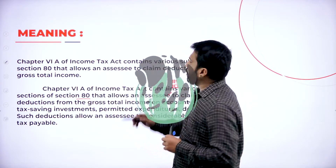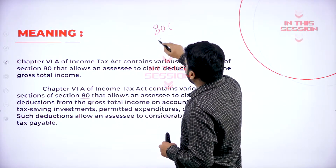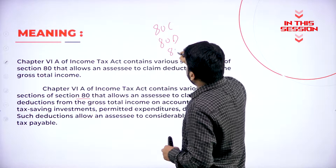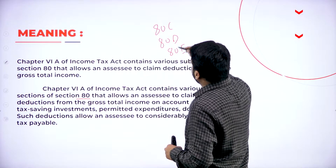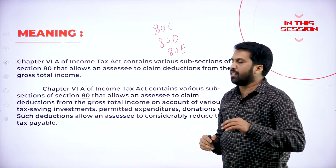Under Section 80, you have 80C, 80D, 80E — that many subsections you will get.